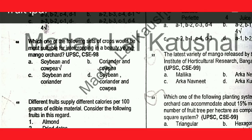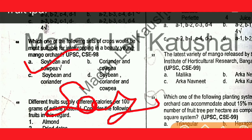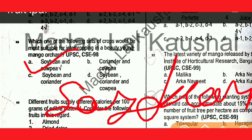Next question: which set of crops would be more suitable for intercropping in a young mango orchard? The answer is soybean and cowpea, because these are dicotyledonous leguminous crops.